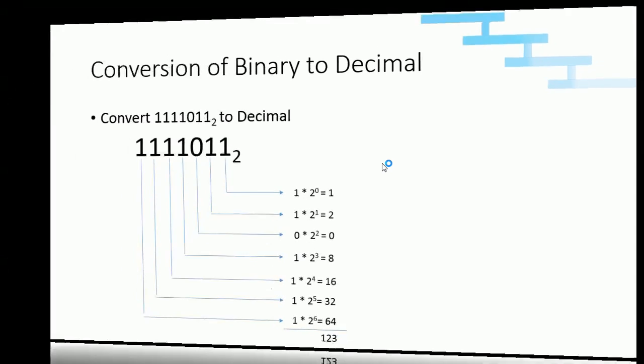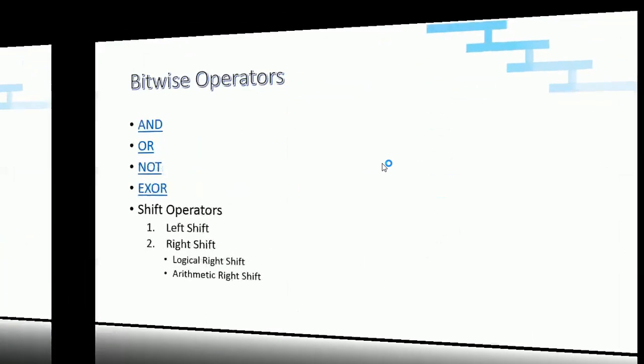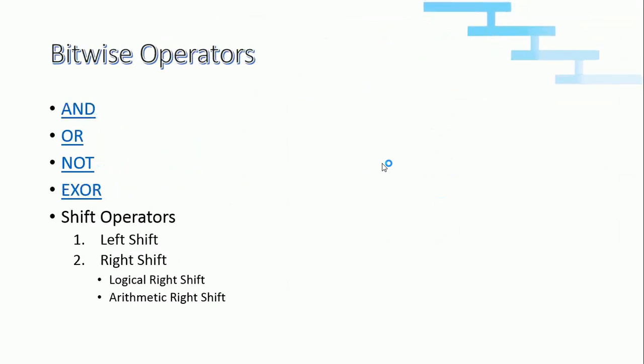Next we will see about bitwise operators. There are four bitwise operators: AND, OR, NOT, and XOR, and two shift operators — left shift and right shift. The right shift is further subdivided into logical right shift and arithmetic right shift.